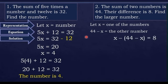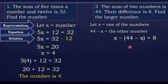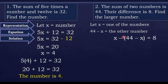Now let us set up the equation. Since the difference of the two numbers is 8, and the keyword here is 'difference,' we are going to subtract. We subtract the second number from the first: x minus (44 minus x) is equal to 8.